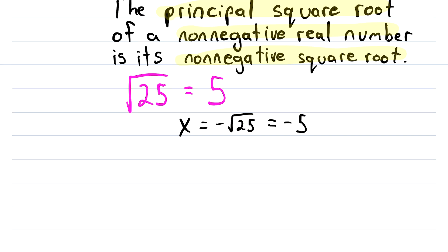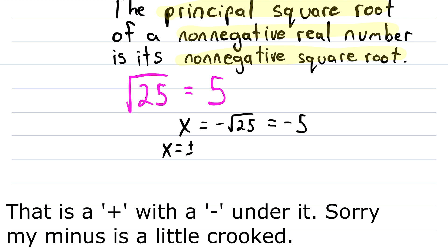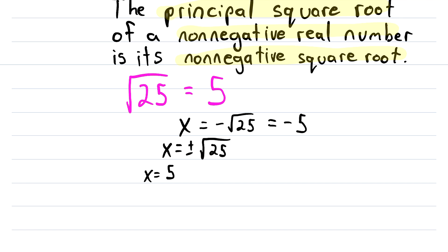If we want to capture the possibility that x is positive or negative, then we can write that x is equal to plus or minus the square root of 25. This leaves the door open to x being equal to positive 5, which is the principal square root, or x could be equal to negative 5, which is the negative square root. But again, the radical symbol alone refers to the principal square root, which is the non-negative square root.